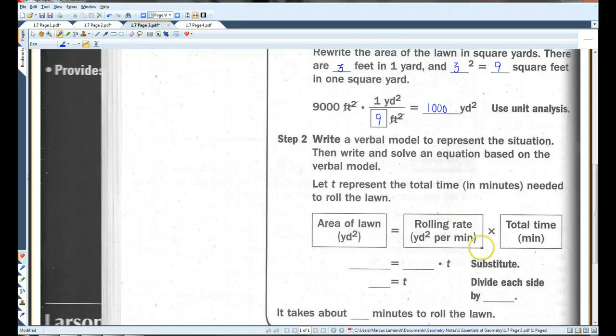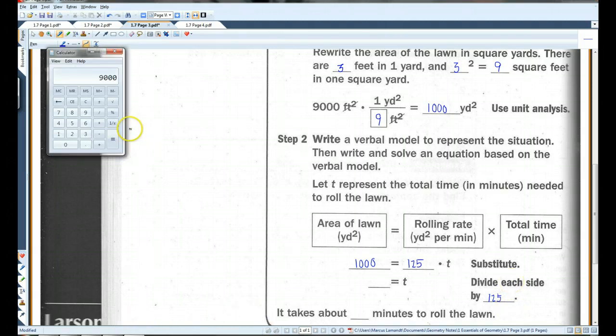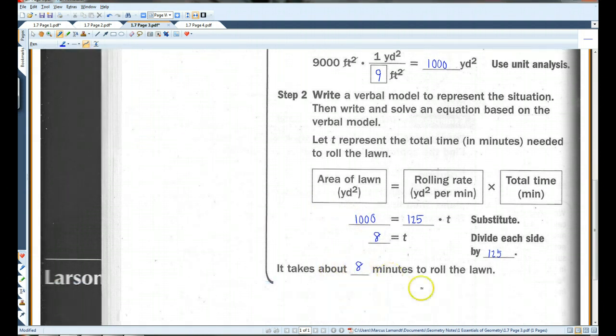We know that the area of the lawn is going to be equal to the rolling rate times however long it takes for us to do the whole lawn. We know that the area of the lawn is 1,000 square yards. The rolling rate, we already know, is 125 square yards per minute. We don't know the time. So, this is our equation. I'm going to divide each side by 125. Let's pull out the calculator again. It's going to take us about 8 minutes to roll the lawn.